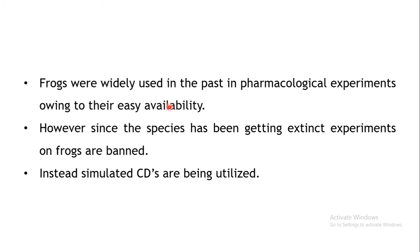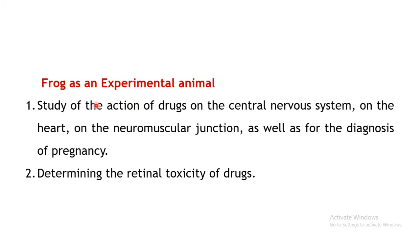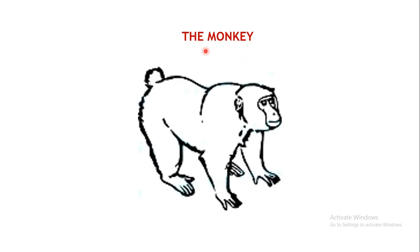The next animal is the frog; Rana tigrina is the commonly used species. Frogs were previously widely used in pharmacological experiments due to their widespread availability. However, the use of frogs is now banned because the species is becoming extinct. Simulated CDs are now available for dissection experiments involving rectus abdominis muscles and other techniques.